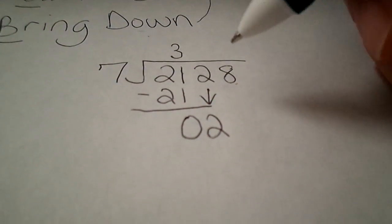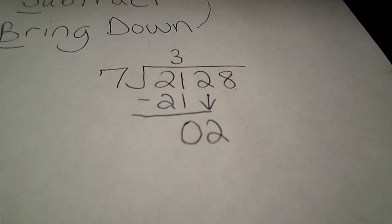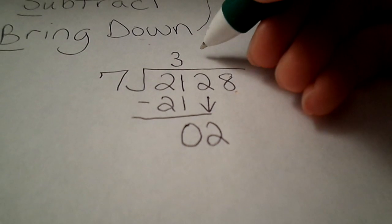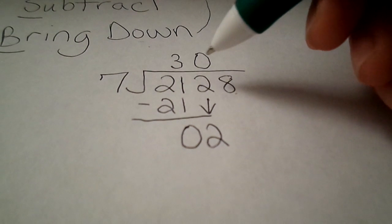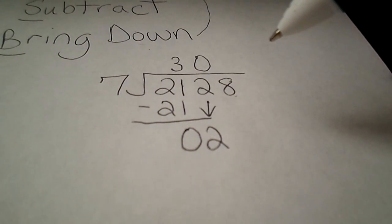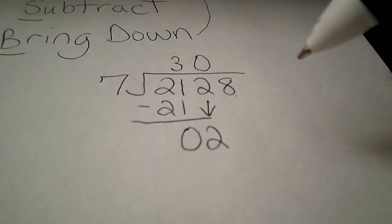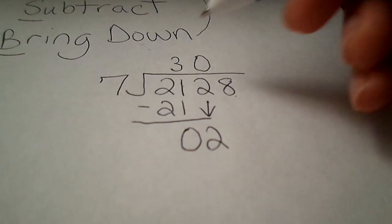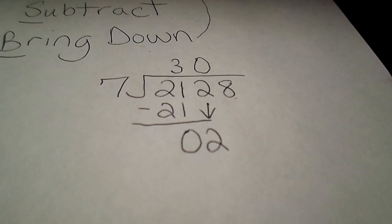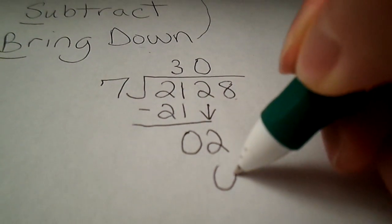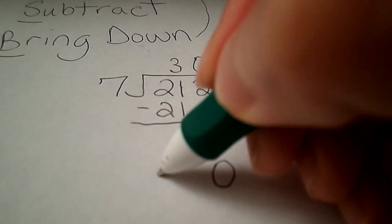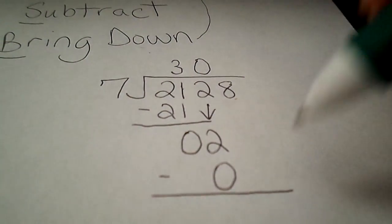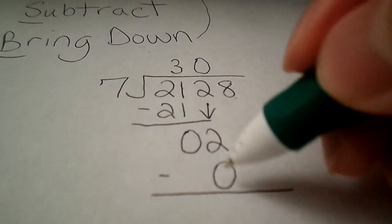Okay. So 2 divided by 7 is 0. 0 times 7 is going to be 0. You can bring that down.